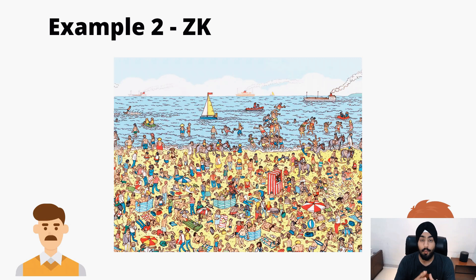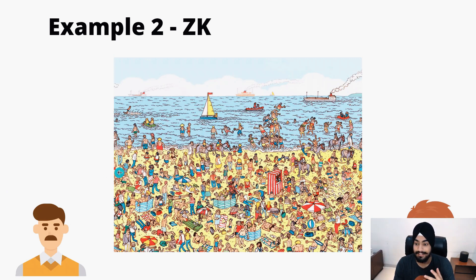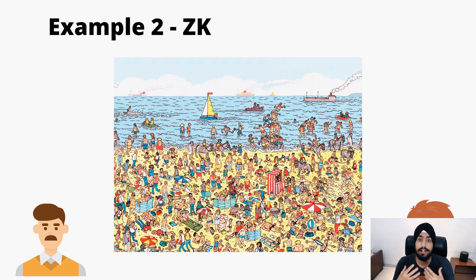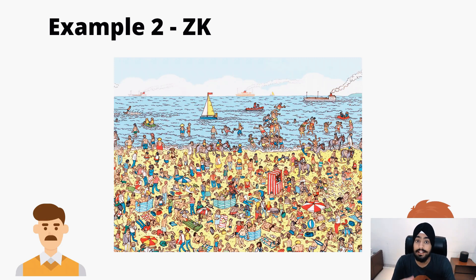Our next example is the Waldo example. Waldo is a cartoon character. We again have two people — a father and a son. The son asks the father where Waldo is in the picture, and the father says he knows. The son asks him to tell, but the father says he will not reveal where Waldo is, but he will prove that he knows — without telling the exact position. The father is the prover and the son is the verifier.